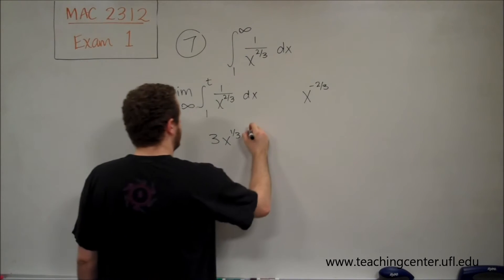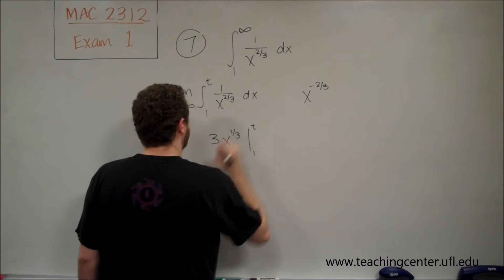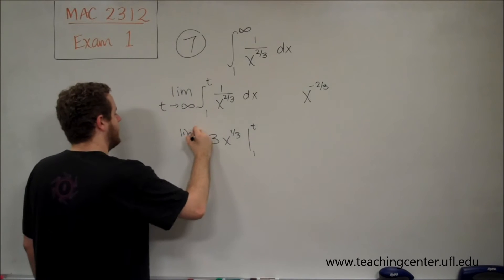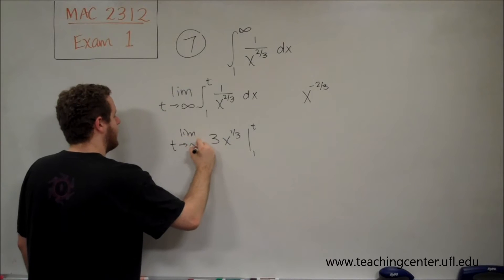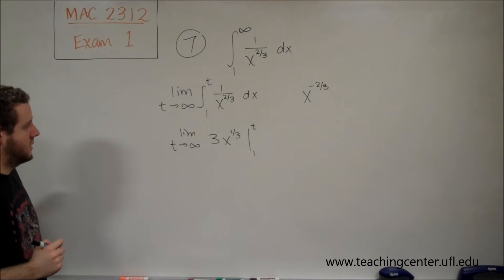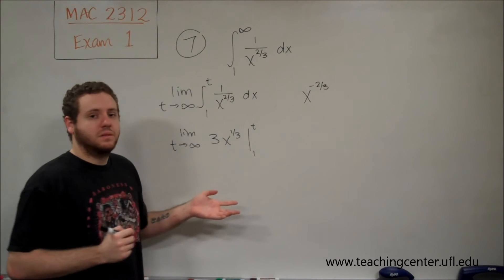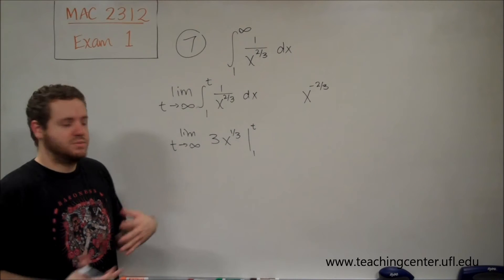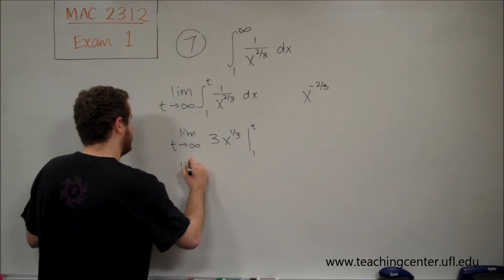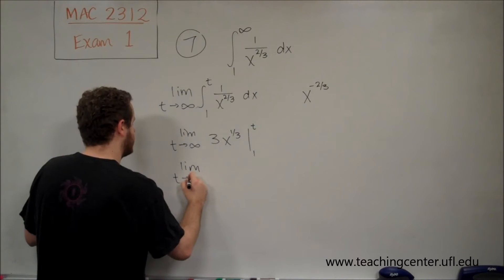We need to go from 1 to t, and we're doing the limit as t goes to infinity. To evaluate this definite integral, we just need to plug in the top bound and the bottom bound and subtract them. Again though, we're doing the limit as t goes to infinity.